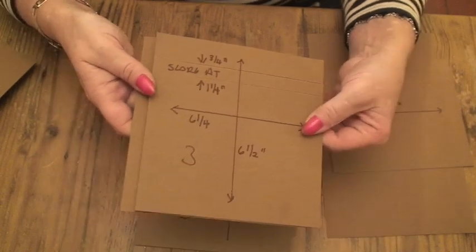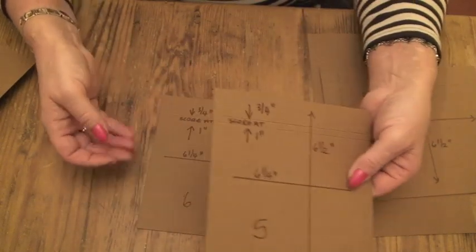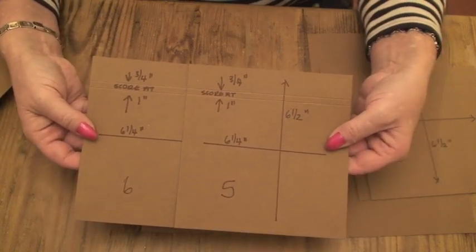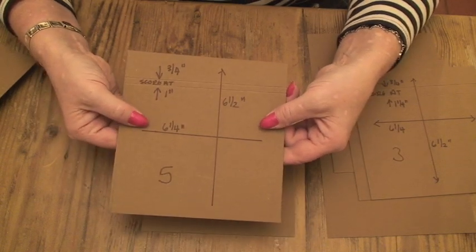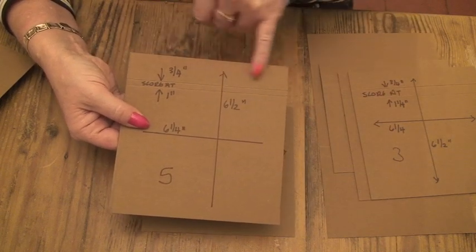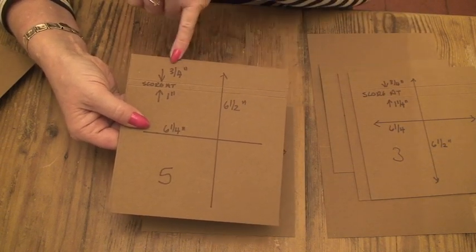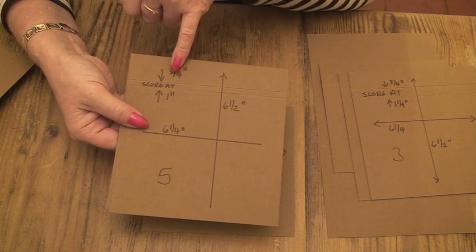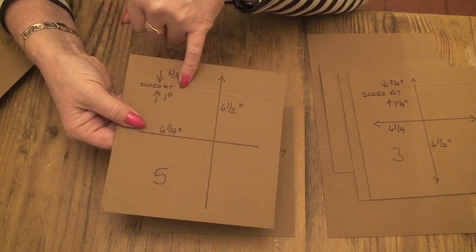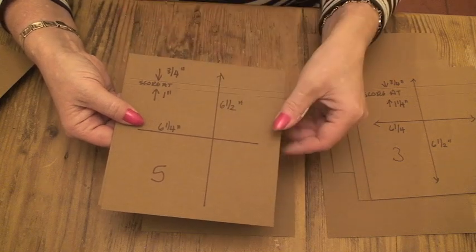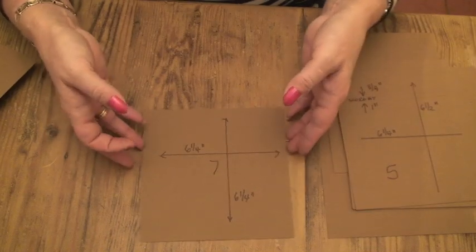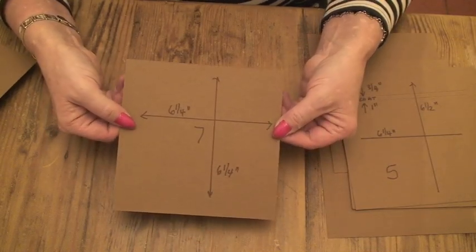The fifth piece and the sixth piece are the same again and they are 6¼ wide by 6½ long and again across the 6¼ inch side I've scored at ¾ of an inch and then at 1 inch and that gives an edge of ¼ of an inch and there's two of those.